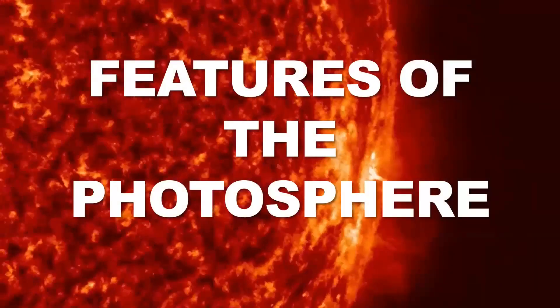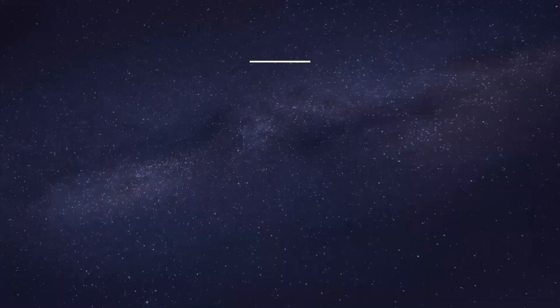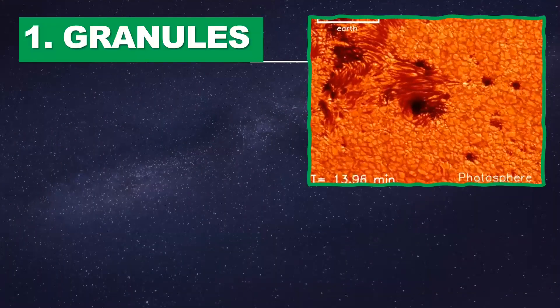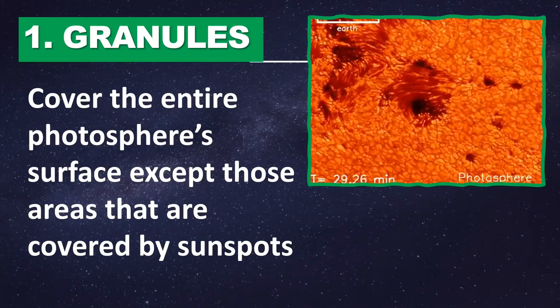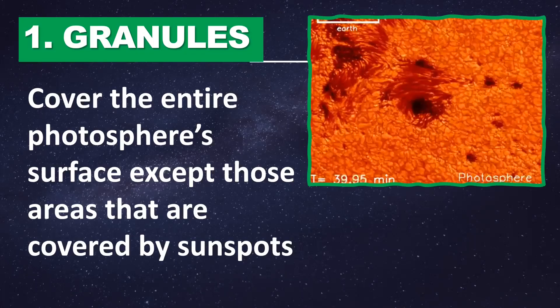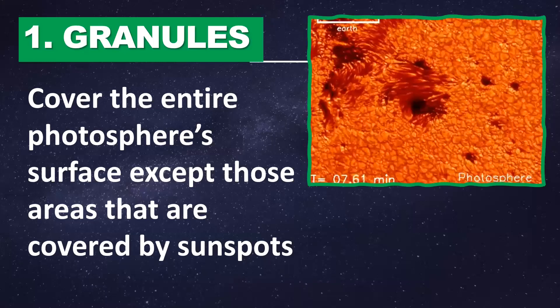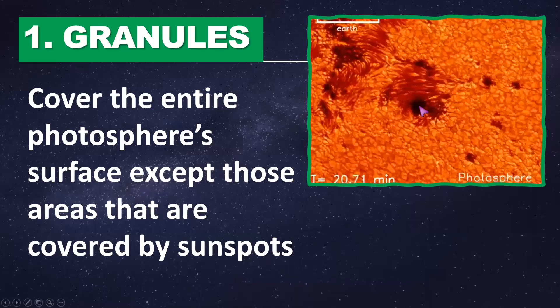What are the features of the photosphere? First, it has granules. The granules cover the entire photosphere surface except those areas that are covered by the sunspots.